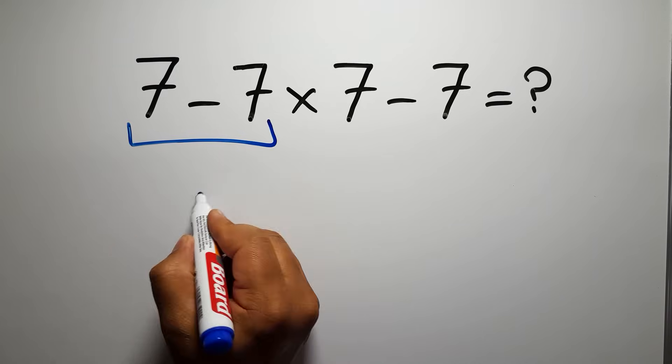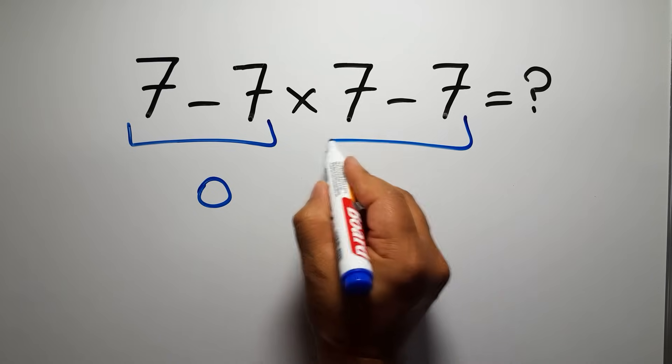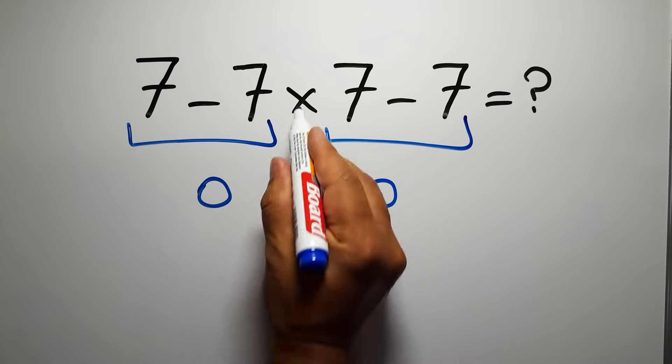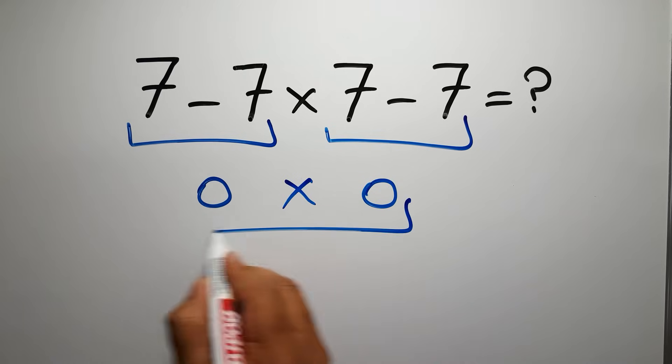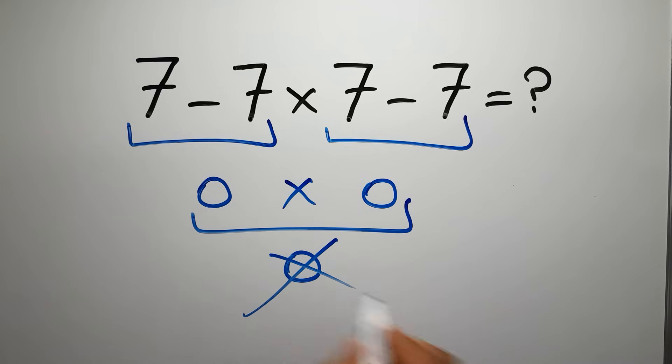7 minus 7 gives us 0, and again here we have 7 minus 7, so 0 times 0 is just 0. But this answer is not correct.